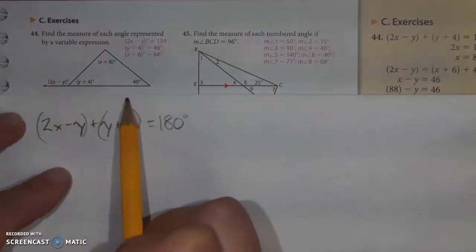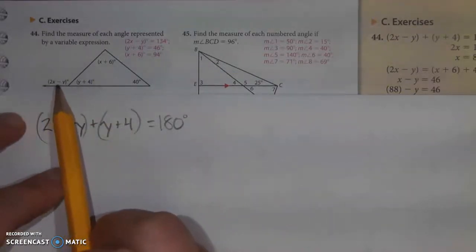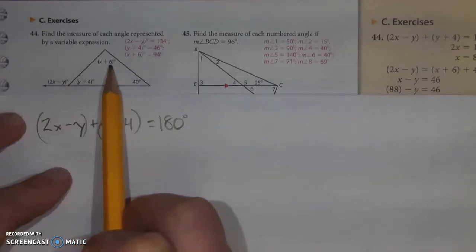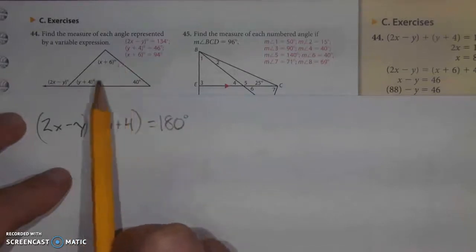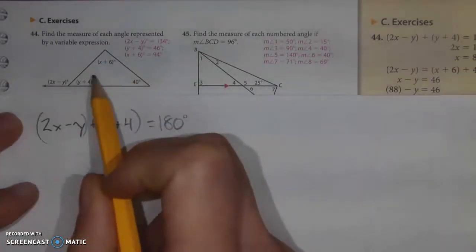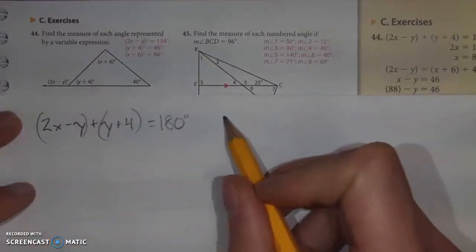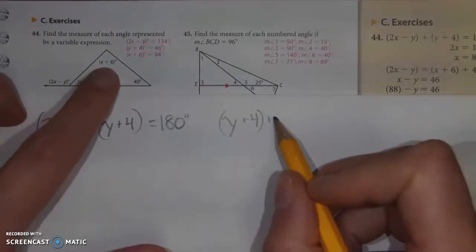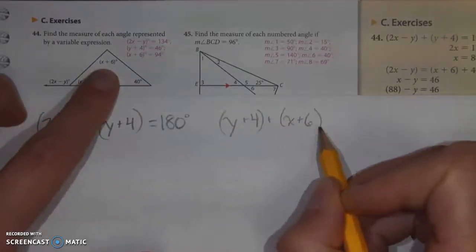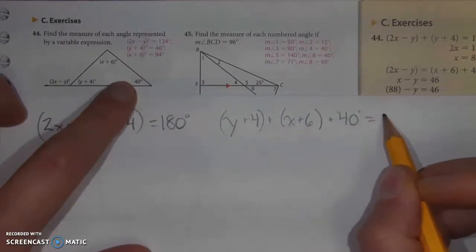Now I can also make a couple other formulas out of this, and it's really up to you which ones you make. You could say that 2x minus y is equal to x plus 6 plus 40. Or you could do the one that I tend to prefer, and that is I'm just going to take the sum of the interior angles of a triangle and make my second equation, which is y plus 4 plus x plus 6 plus 40 is equal to 180.